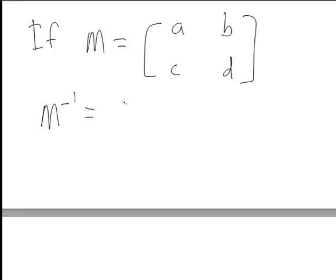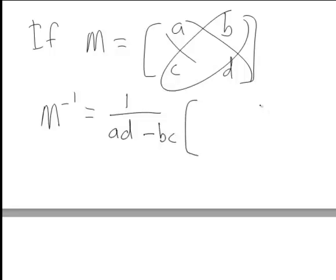1 divided by the determinant of M which is 1 divided by the product AD minus BC. And then inside that matrix the elements A and D swap places and the elements B and C change sign.